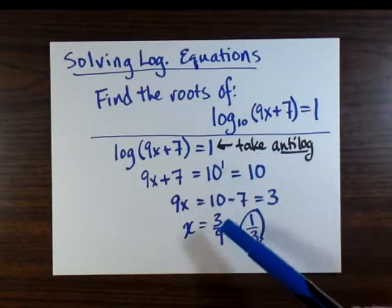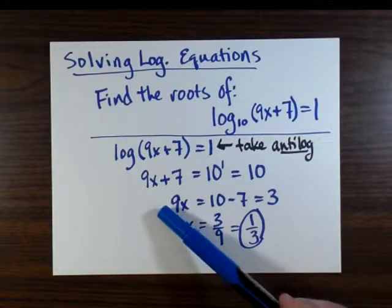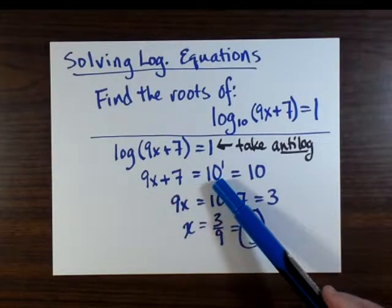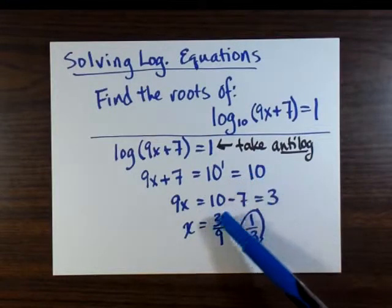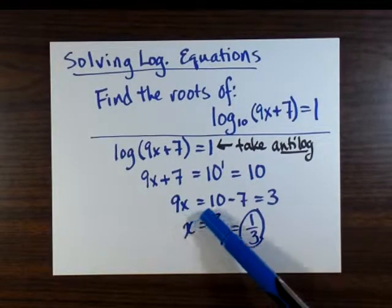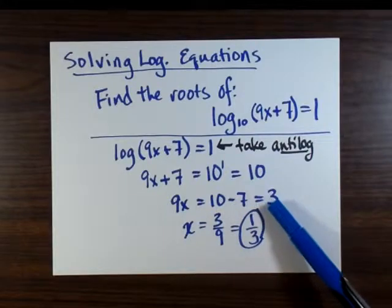So the first thing we do to this statement is we take the antilog of both sides, and that means that the expression passed into the log turns into simply 9x plus 7. The log disappears. And the antilog of 1, of course, is 10 to the 1, which is 10.